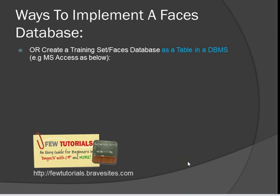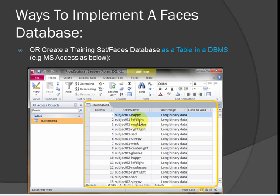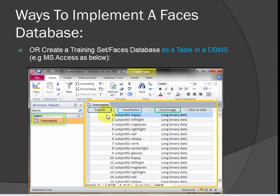Moving on to our next option: creating a faces database as a table in a DBMS. This is the final look of the faces database as it should look in MS Access. Training set one is just the name I gave to my faces database. It has three columns: face image, face name, and face ID. The face image is stored as long binary data — don't worry about it, this is just the format that Access uses to store an image. The face name could be anything; you could put your social security number or whatever you're using. Face ID is kept to make each record unique in the Access database, serving as the primary key.